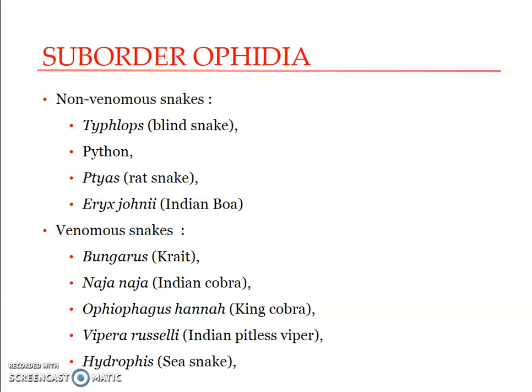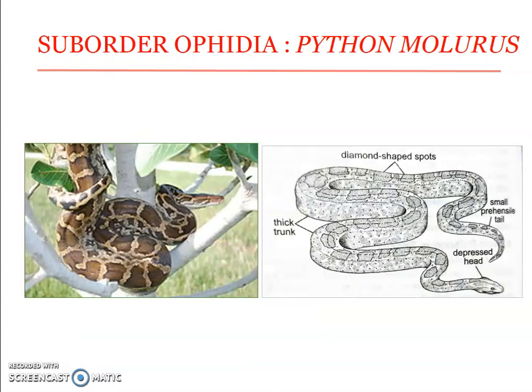The first non-venomous snake is the python — a large, massive, non-poisonous snake. The body is covered with small scales and shields on the head, and large plates below. The tail is prehensile and it has a vertical pupil; the premaxilla also bears teeth in Python. It constricts warm-blooded animals in its coils, squeezing and killing them through suffocation, then slowly swallows the prey.